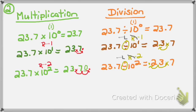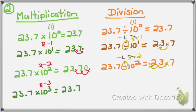Let's look at the last comparison. If I have 23 and 7 tenths times 10 to the 3rd power — 10 to the 3rd power is greater than 1, so greater means I move my decimal to the right three places since my exponent is 3. I write down 23.7, cross out the decimal, and move it three places to the right, adding place value zeros as needed. So 23 and 7 tenths times 10 to the 3rd power is 23,700.